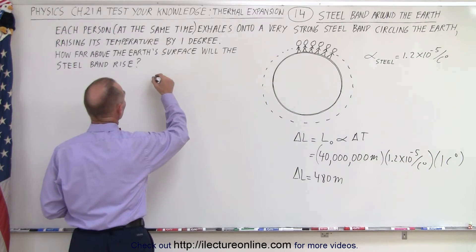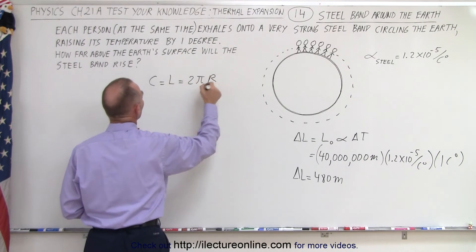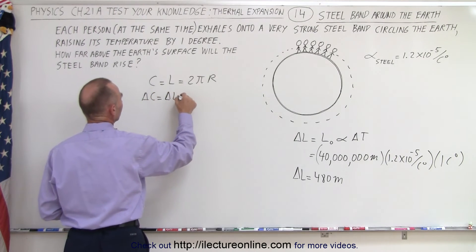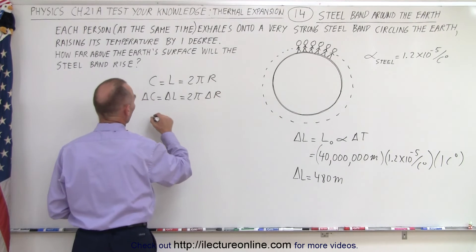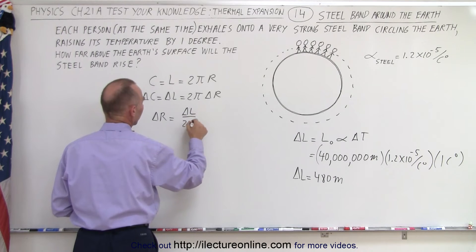Well we can say that the circumference, which is equal to the length, is equal to 2π times the radius. So the change in the circumference, which is equal to the change in the length, is equal to 2π times the change in the radius. Or the change in the radius is equal to the change in the length divided by 2π.